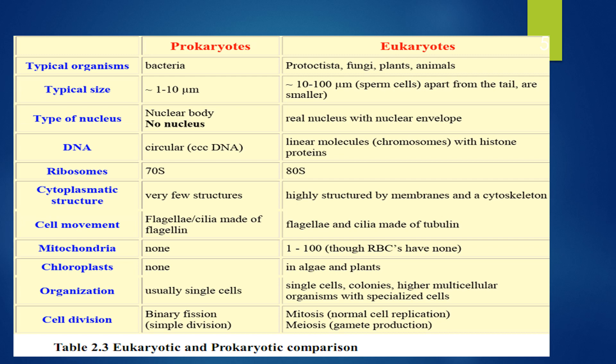When we see the typical size of these organisms, Prokaryotes are measured in micrometers. Eukaryotic cells — for example, sperm cells apart from the tail — are smaller. When we come to the types of nucleus, there is no nucleus in Prokaryotes, but there is a real nucleus with nuclear envelopes in Eukaryotes, and Prokaryotes have a nuclear body.